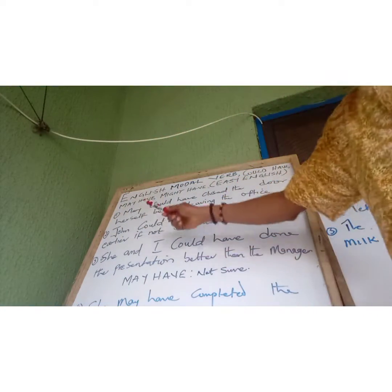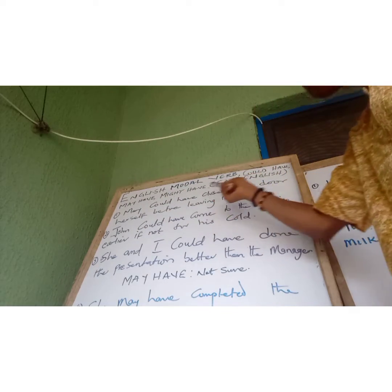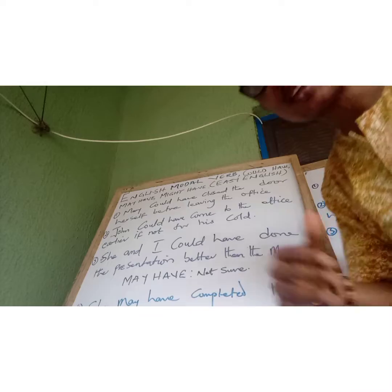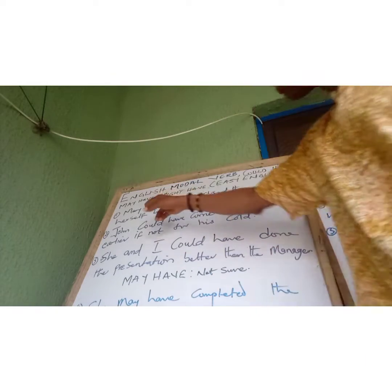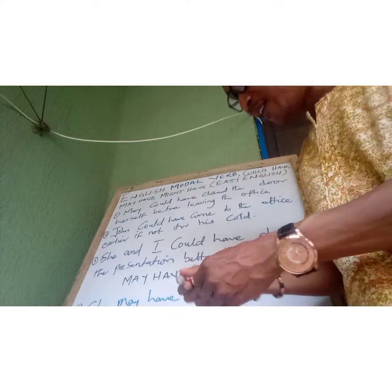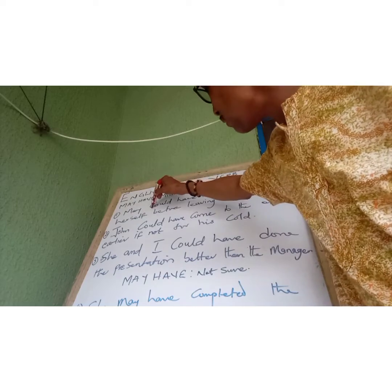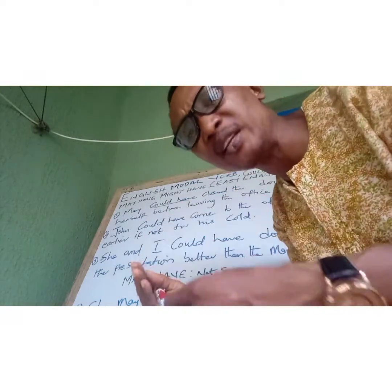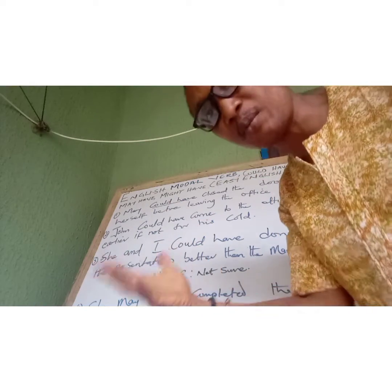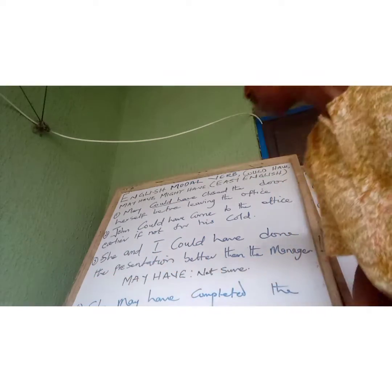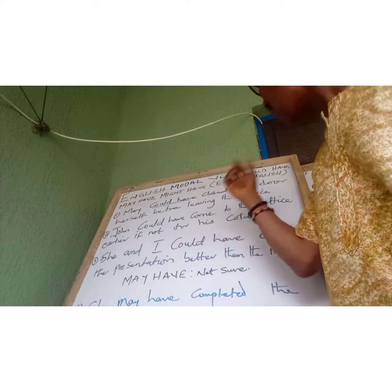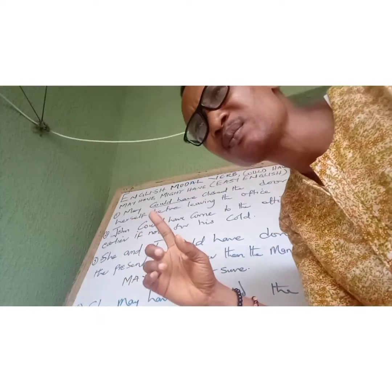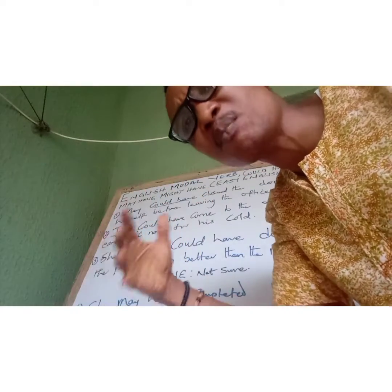'Mary could have closed the door before leaving the office.' The use of 'could have' — one of the modal auxiliary verbs — shows capability: the ability to do something. So Mary could have closed the door before leaving; we are suspecting there is a strong possibility that Mary carried out that action.